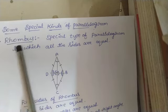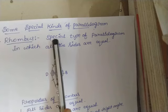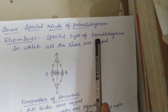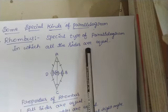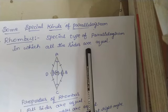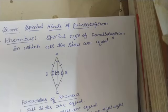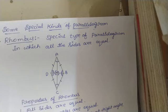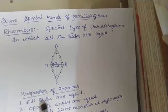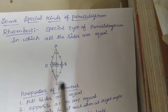Let us go for rhombus. Rhombus is a special type of parallelogram in which all the sides are equal. The rhombus holds all the properties of parallelogram, and it also has special properties. By using those special properties we can identify a rhombus. The first property: all the sides are equal.